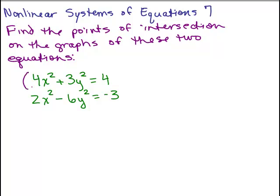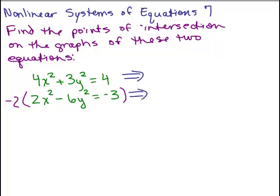We could multiply the top equation by 2 so that we get a 6y-squared that will cancel with a negative 6y-squared. Somebody else might multiply the bottom equation by negative 2 to get a negative 4x-squared that cancels with this positive 4x-squared. There are two ways to solve this; it's up to you. I'll go ahead and do it this way, but keep in mind that is not the only way to solve this.